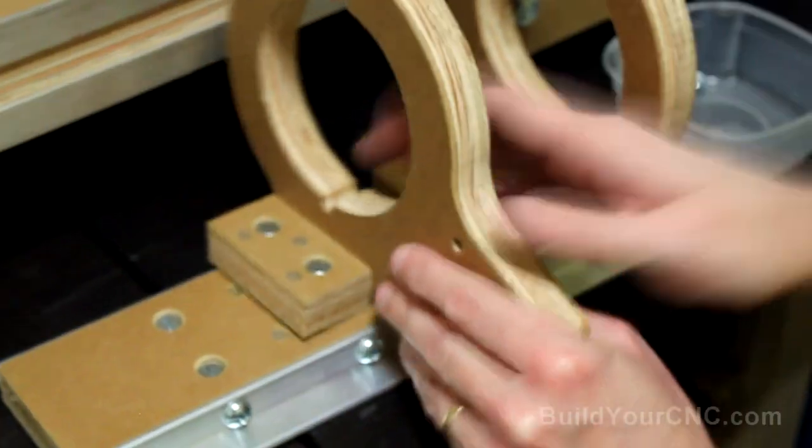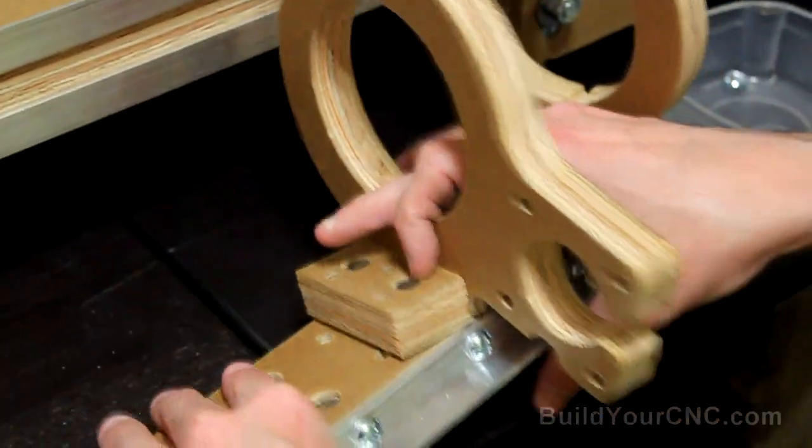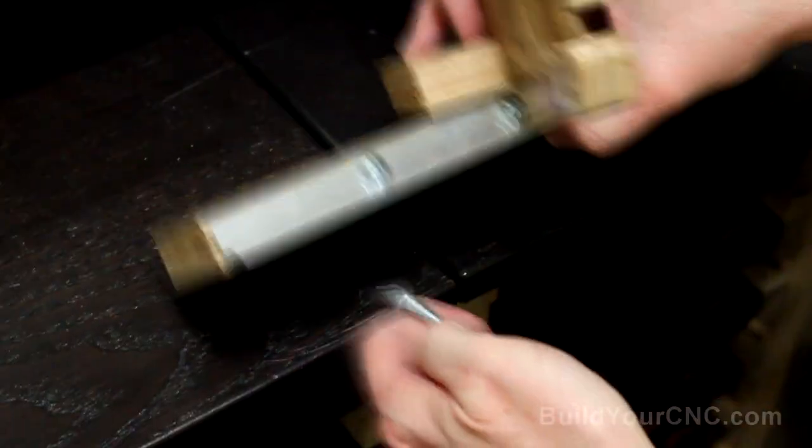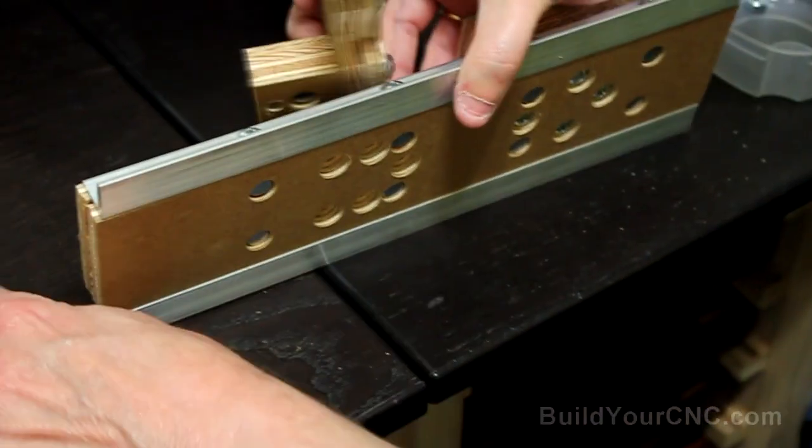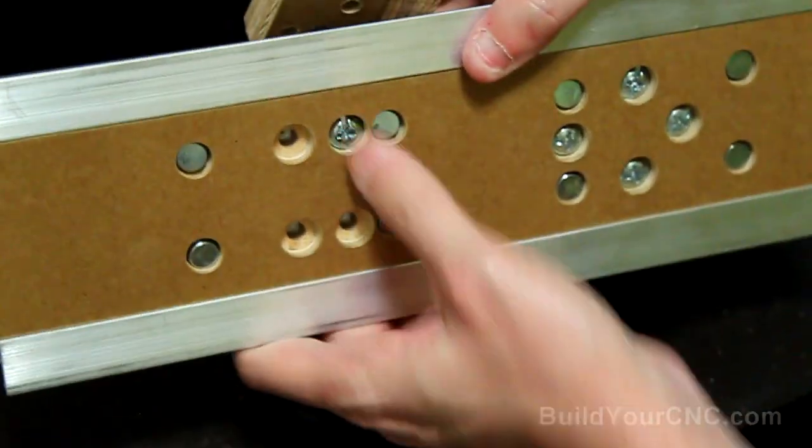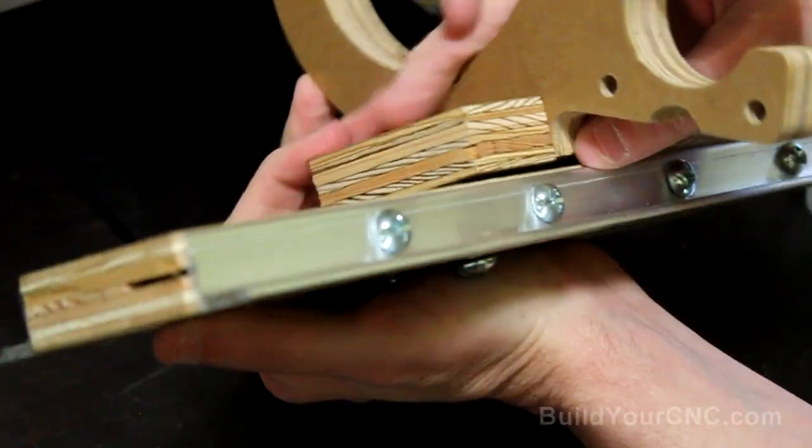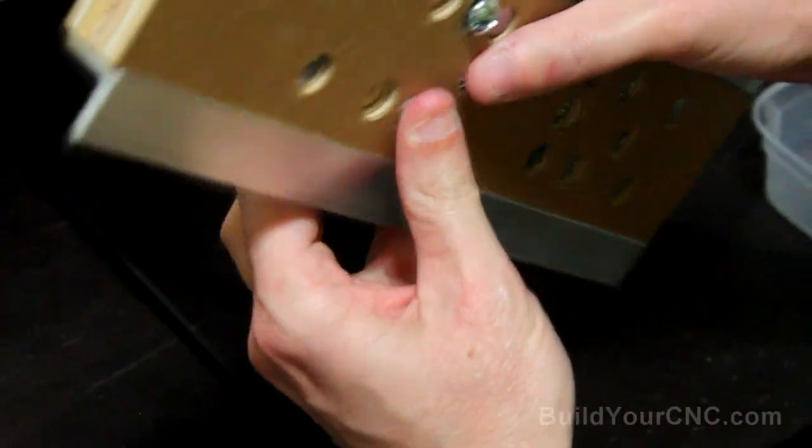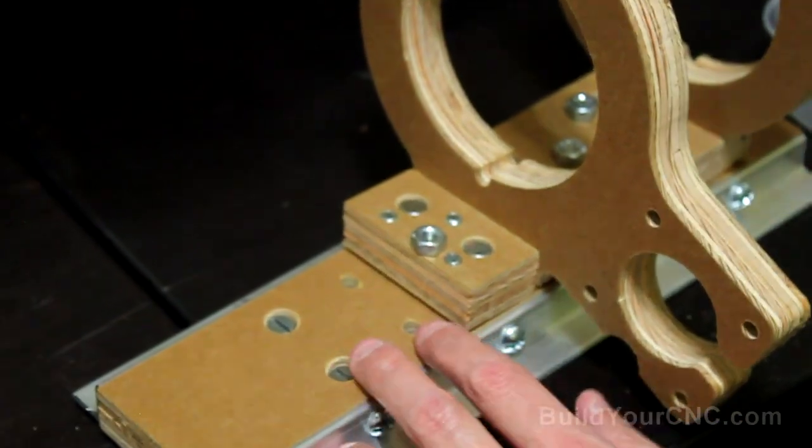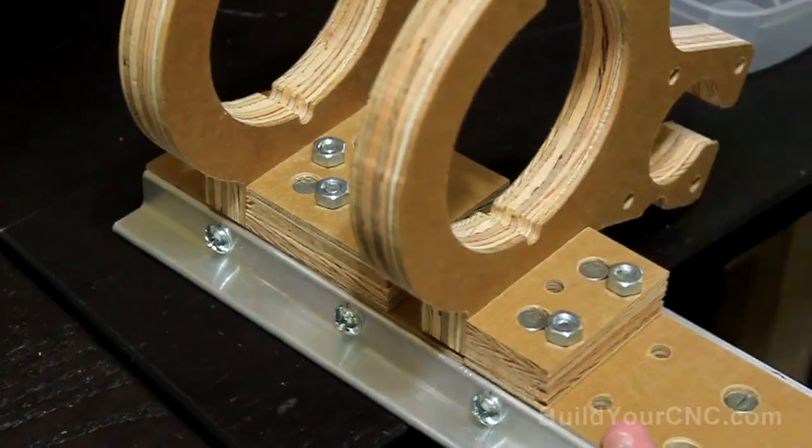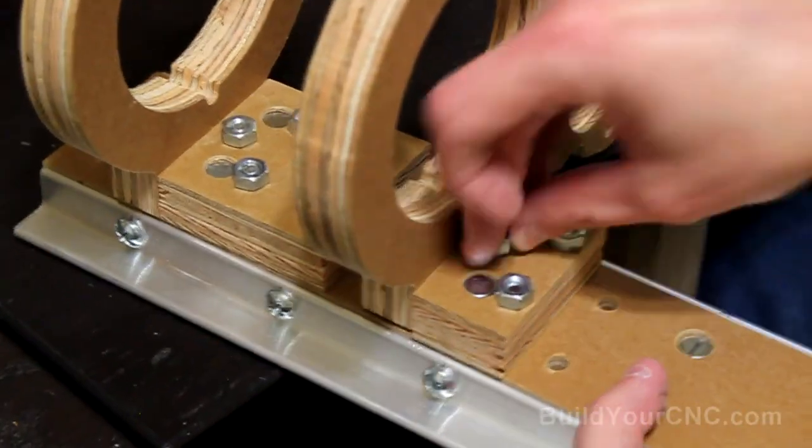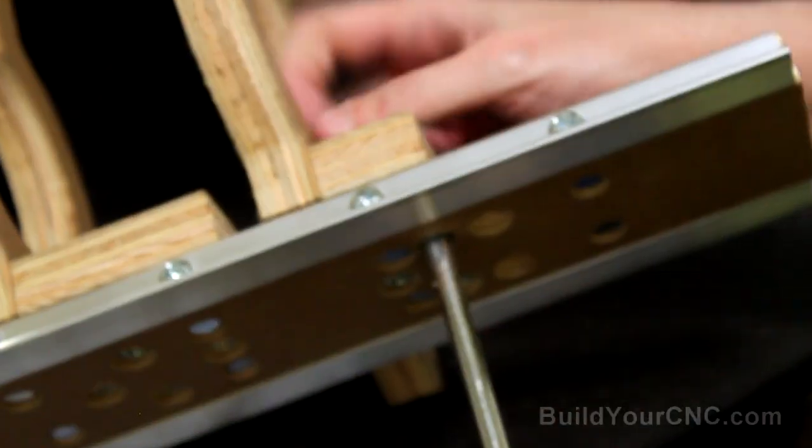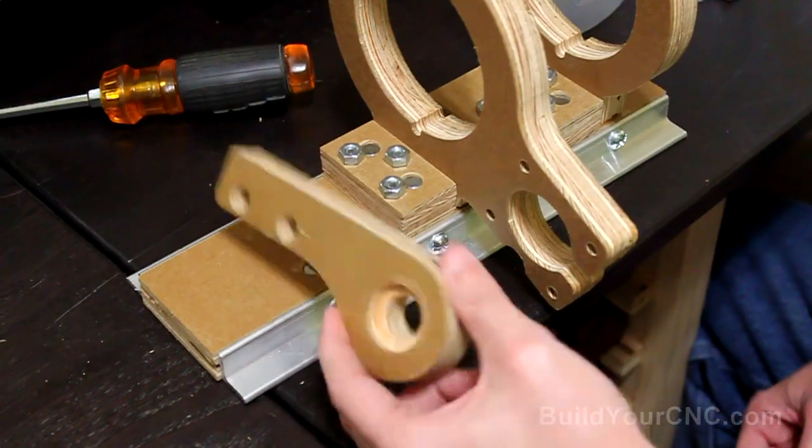And now we fasten it to the Z-axis. We'll use three one and a half inch screws. And we go into these three holes here. Line it up and then use three quarter inch nuts.